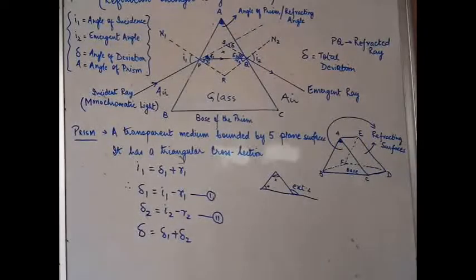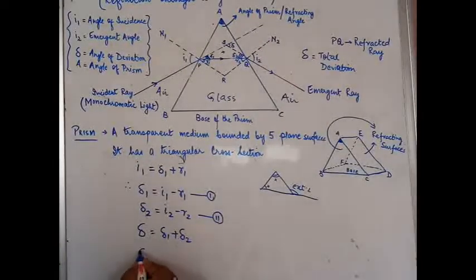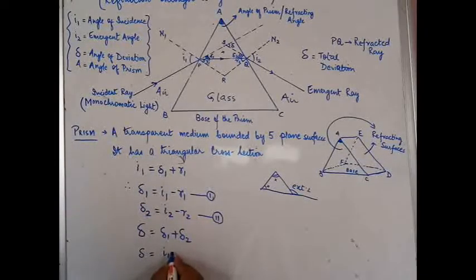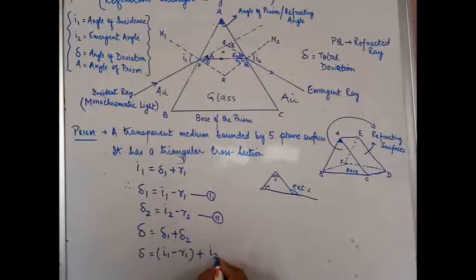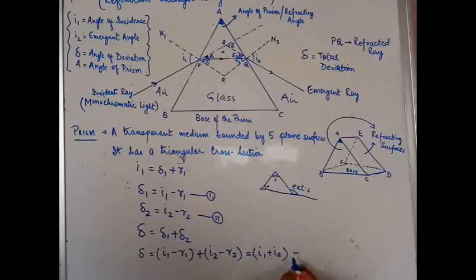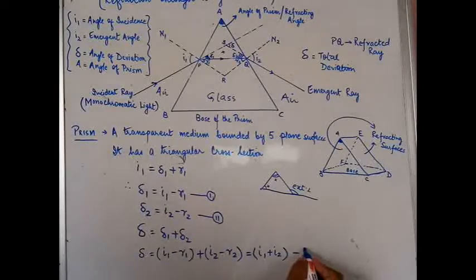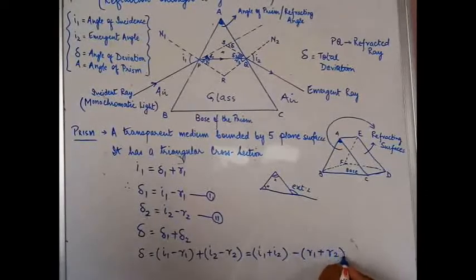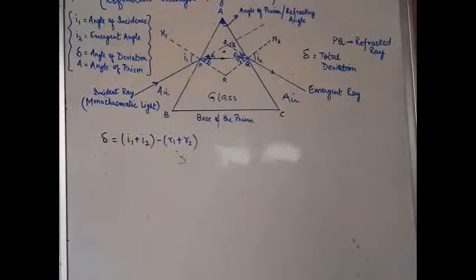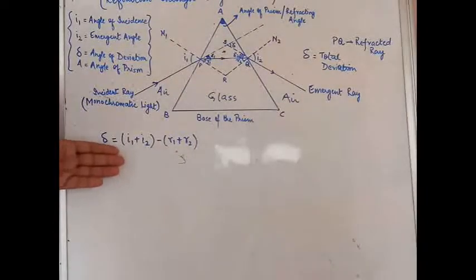So delta = delta1 + delta2. Replacing: delta = (I1 - R1) + (I2 - R2). Grouping terms: delta = I1 + I2 - (R1 + R2). This is where we have arrived — the total angle of deviation expressed in terms of the angles of incidence, emergence, and refraction at both surfaces.